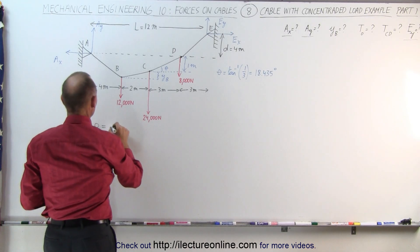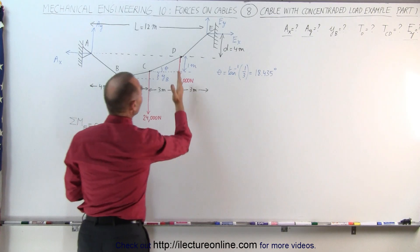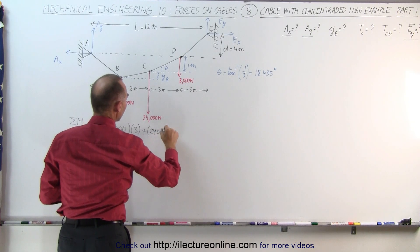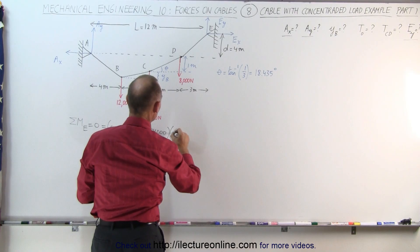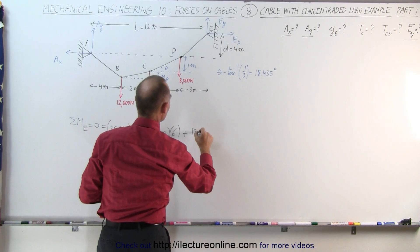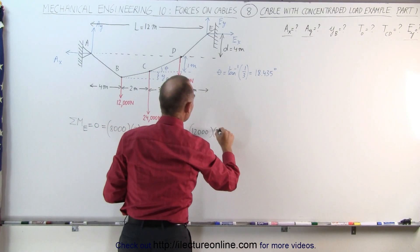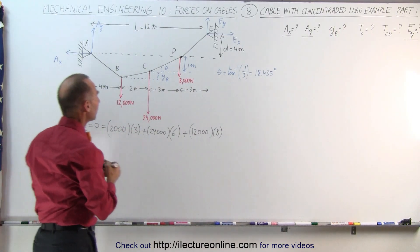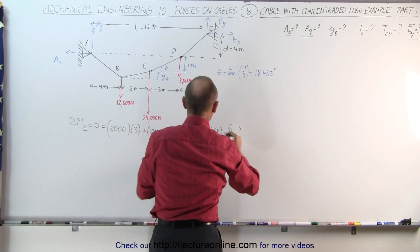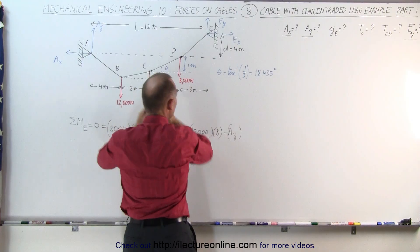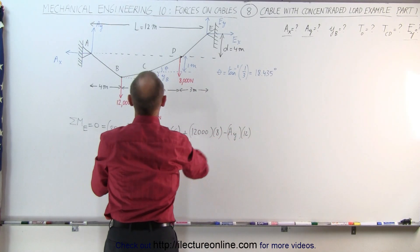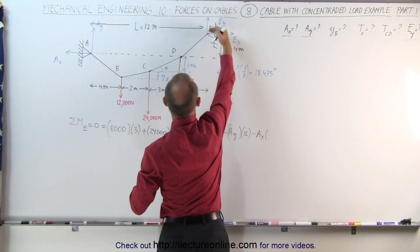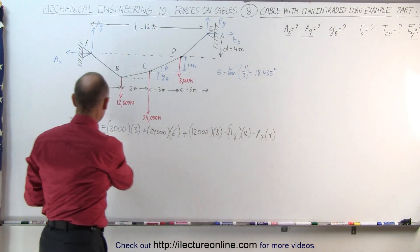We have 8,000 multiplied times the distance to point E, which is 3 meters. Plus 24,000 multiplied times 6 meters. Plus 12,000 multiplied times 8 meters. Now we have A sub Y, which will cause a clockwise moment — that's negative — so minus A sub Y times 12 meters. And A sub X also gives a clockwise moment, so minus A sub X times 4 meters. All that should add up to zero.